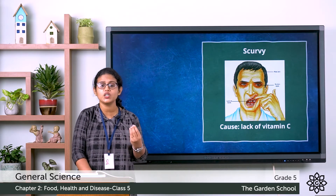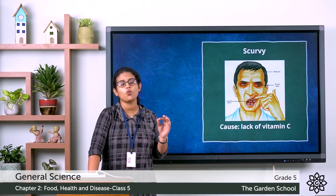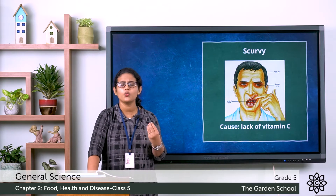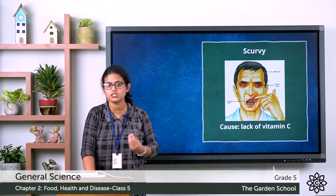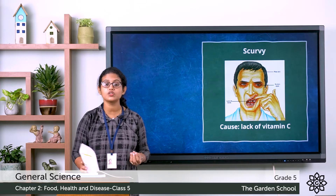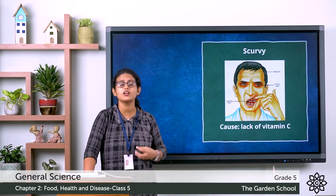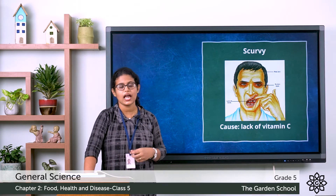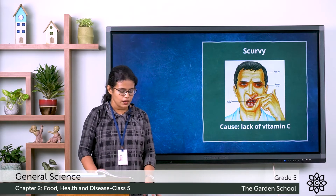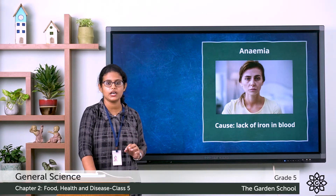Scurvy can be cured by having vitamin C rich food. Food items rich in vitamin C include lemon and orange. Moving to the next deficiency disease — anemia.